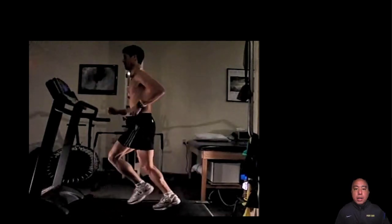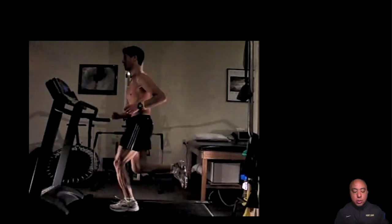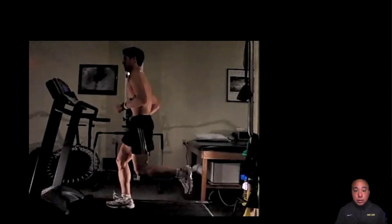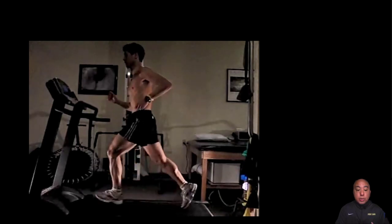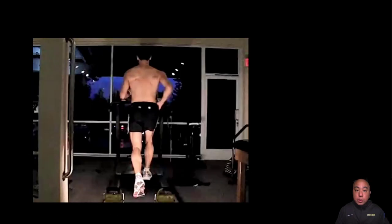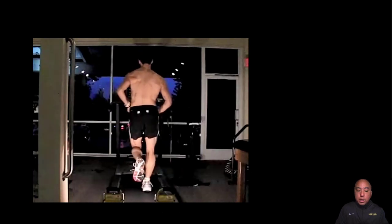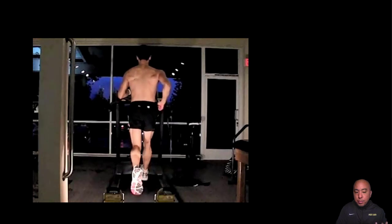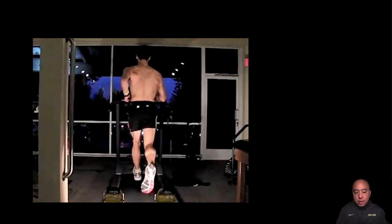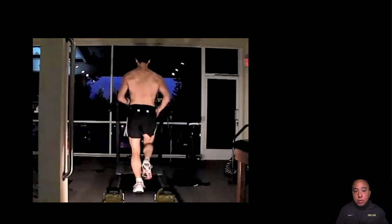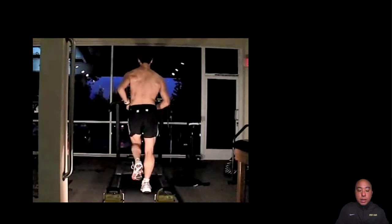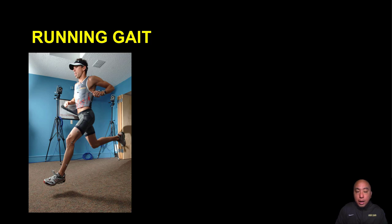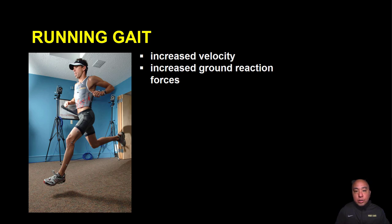We have a runner on a treadmill and we can view the runner from both the sagittal view as well as the frontal view on the posterior side. We can discuss the different aspects of pelvic movement, hip kinematics, and knee kinematics, as well as the ankle, and describe the differences seen during running compared to walking. The obvious differences include increased velocity and increased ground reaction force during the stance phase.